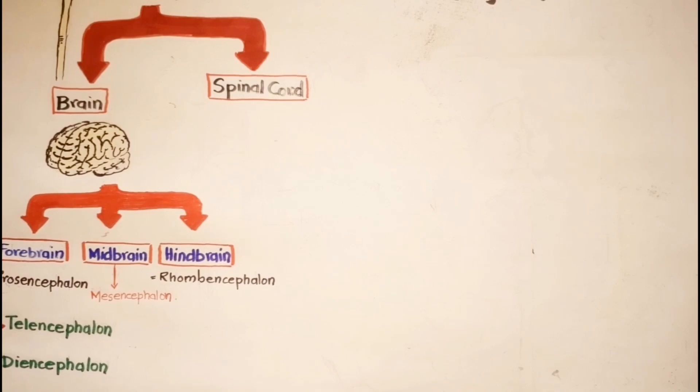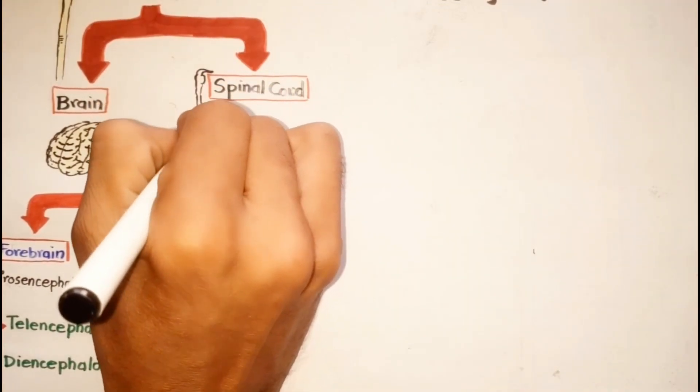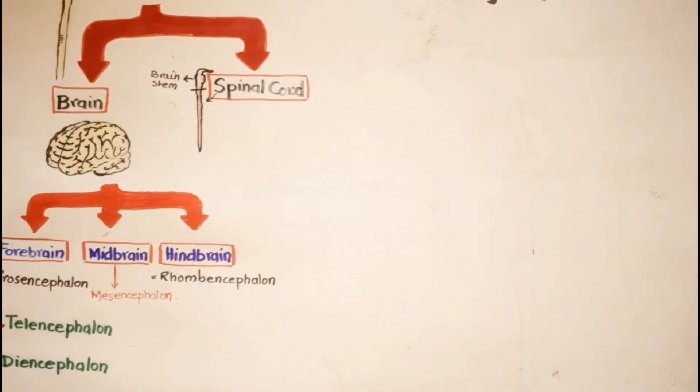The second part of the central nervous system is the spinal cord, which is a continuation of the brain and brain stem and ends at the L1-L2 vertebral level.